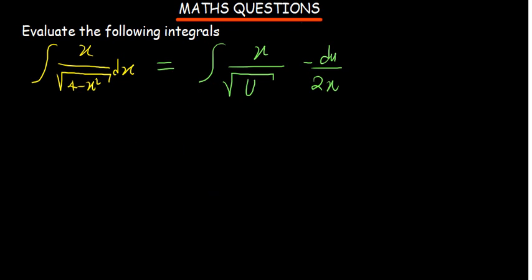So we can see that we can cancel out x here. And this negative, I'm going to bring it outside the integral symbol. We know square root of u is the same as u to the power half. But I'll take this on top, becomes u to the power negative half, and then du.